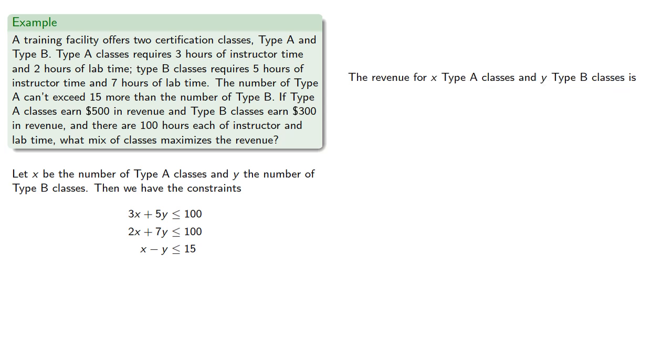The revenue for type A and type B classes is, and so our system of inequalities becomes, and we want to maximize our objective function. Adding the slack variables and rewriting the objective function as an equation in standard form gives us.